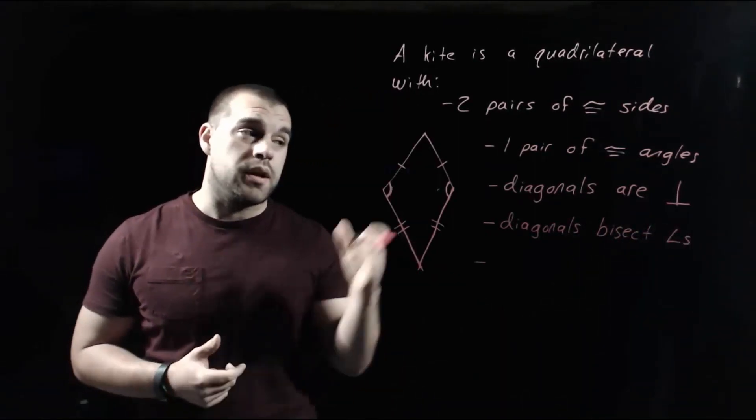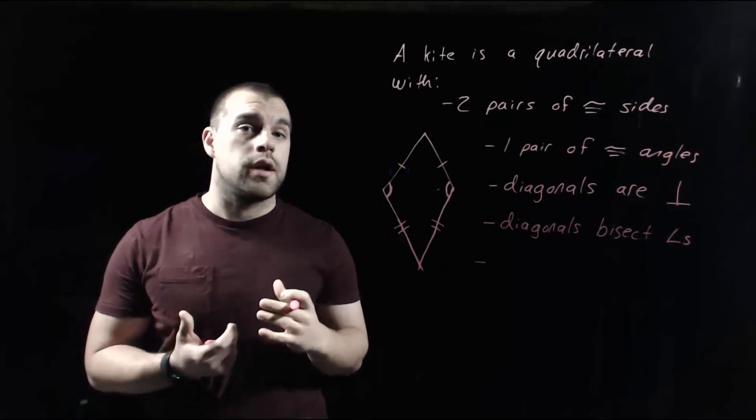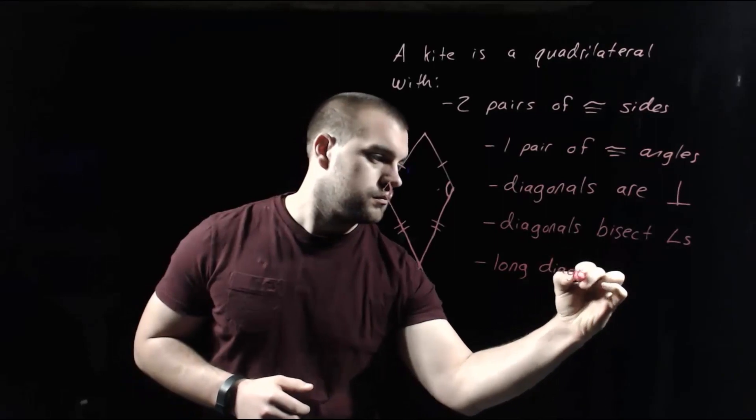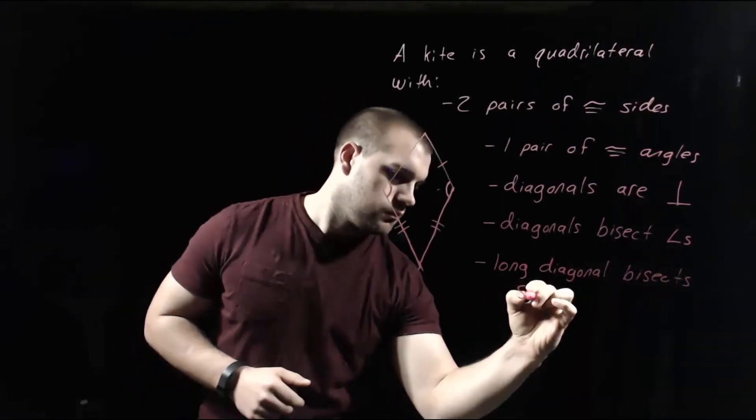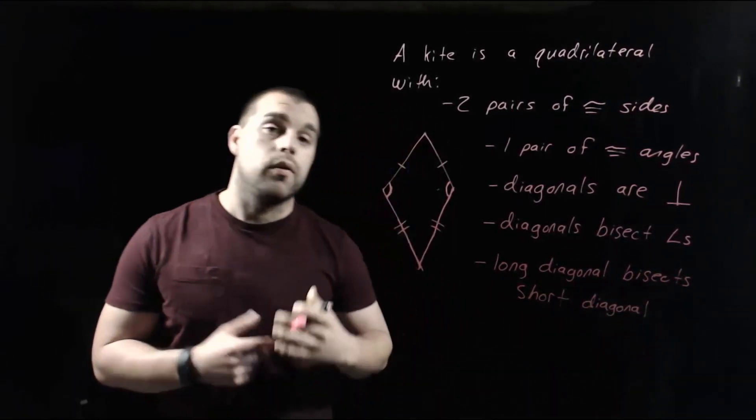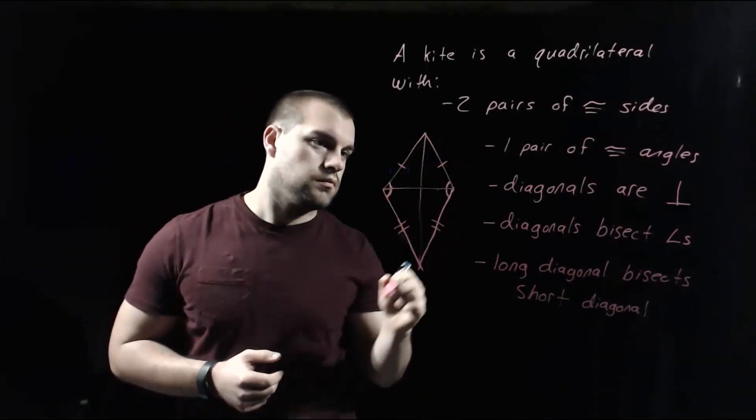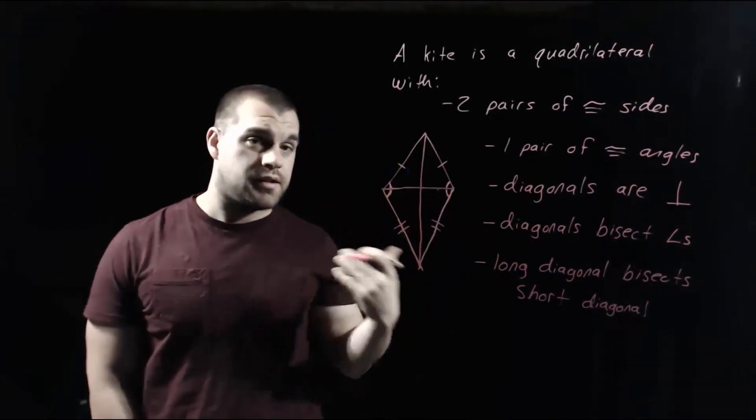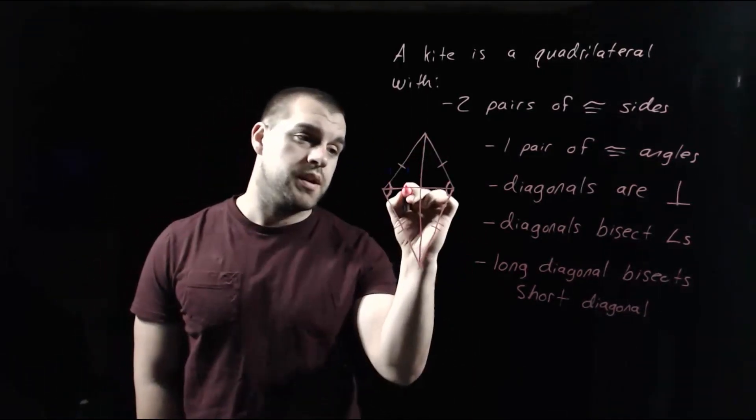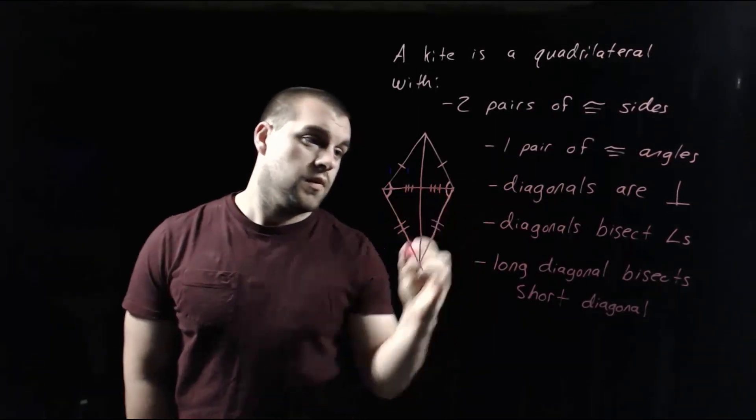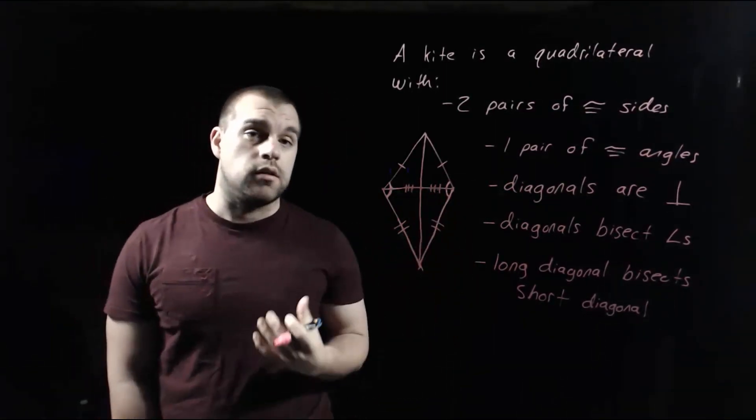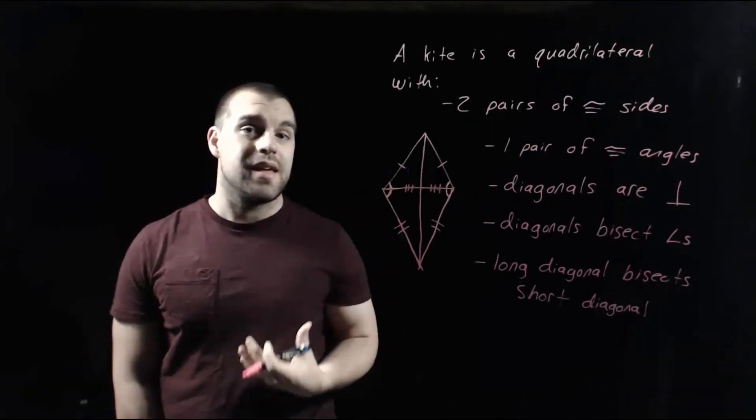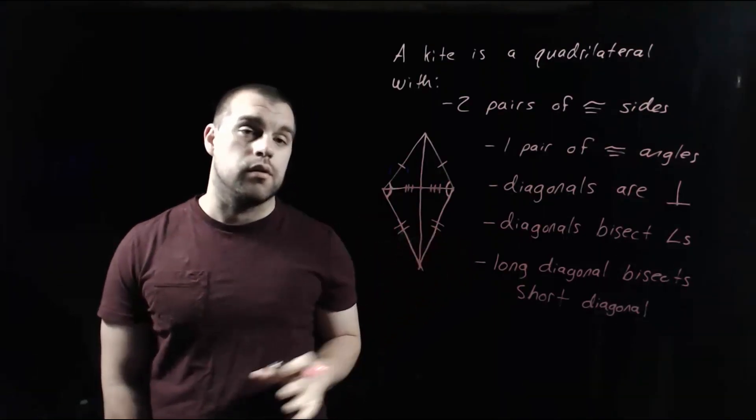And our last property, again dealing with the diagonals, the longer diagonal is going to bisect the shorter diagonal. So if we were to draw in those diagonals, this longer diagonal is cutting that small diagonal into two congruent pieces. Now notice that our big long diagonal is not being bisected. It's just the diagonal that connects the two congruent angles that ends up getting bisected when we draw those diagonals in.